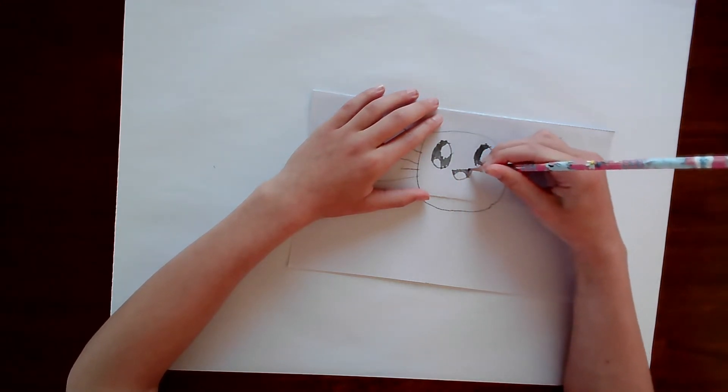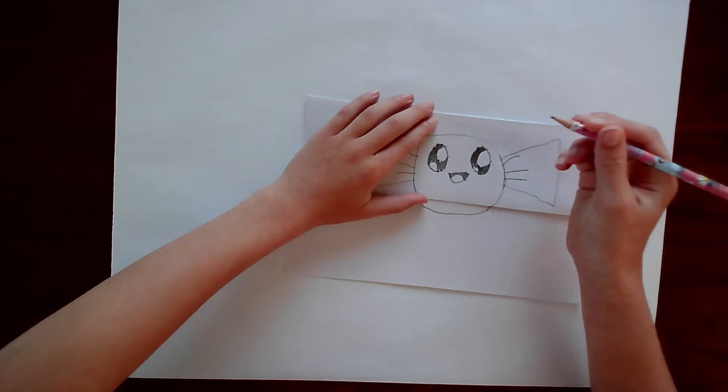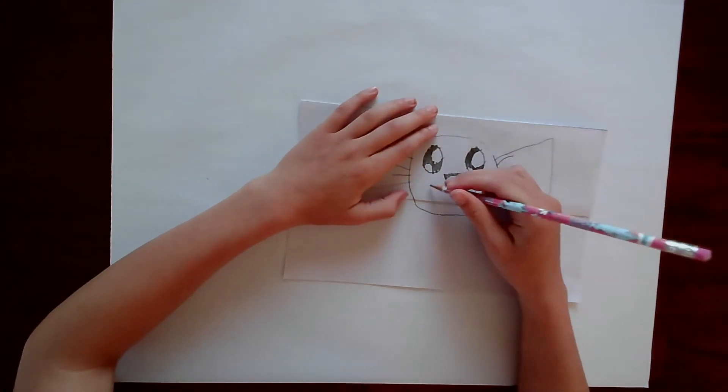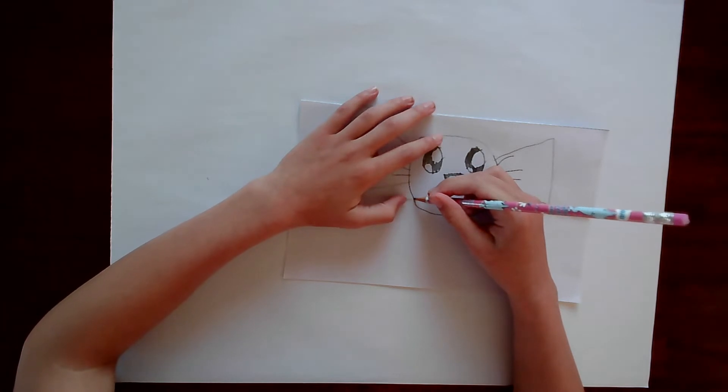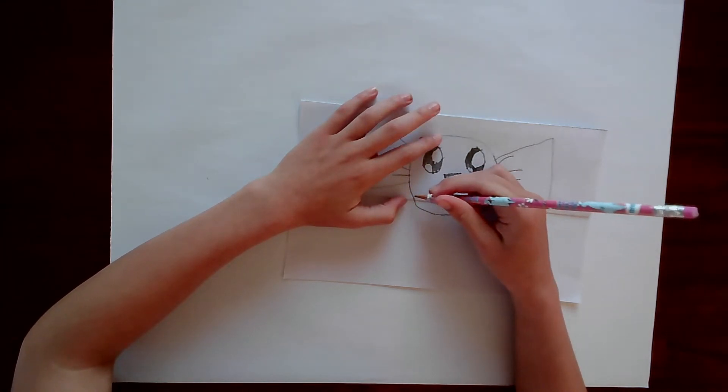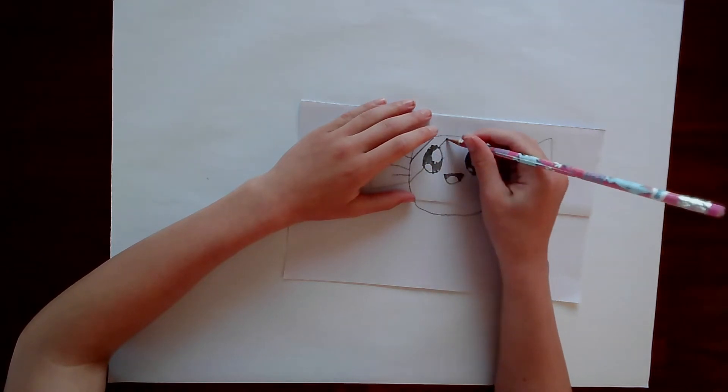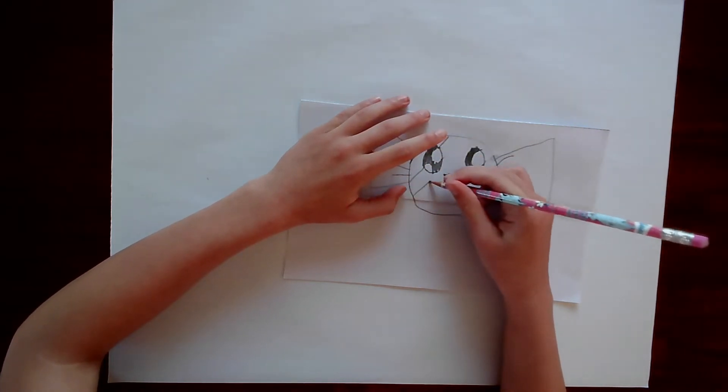Now, we're gonna draw a cute little mouth up there. Now, we're gonna draw the lines for the other colors for the candy bar.